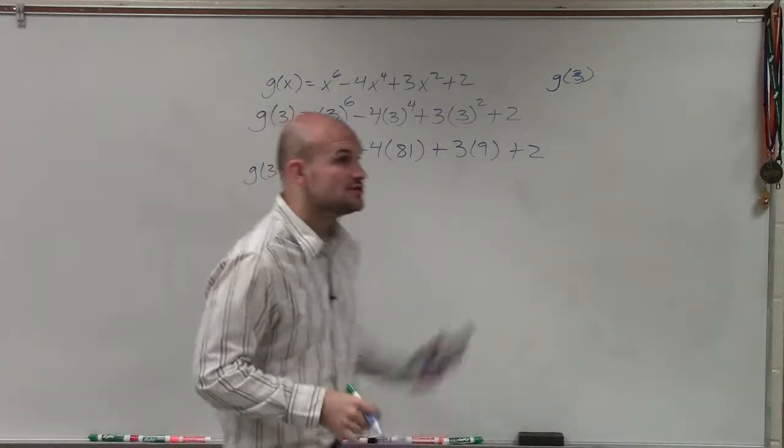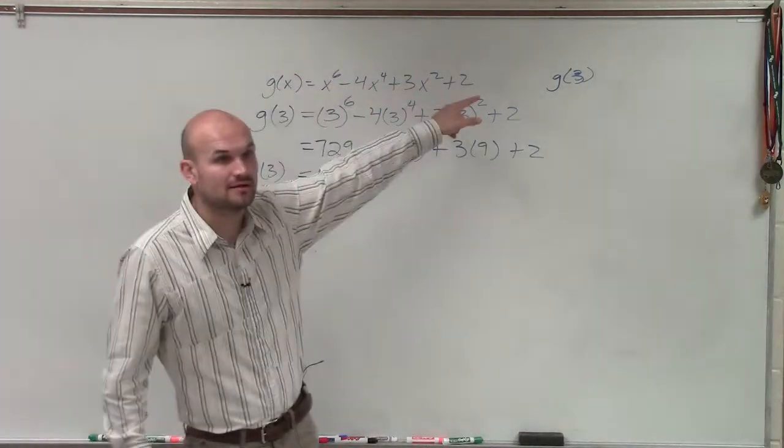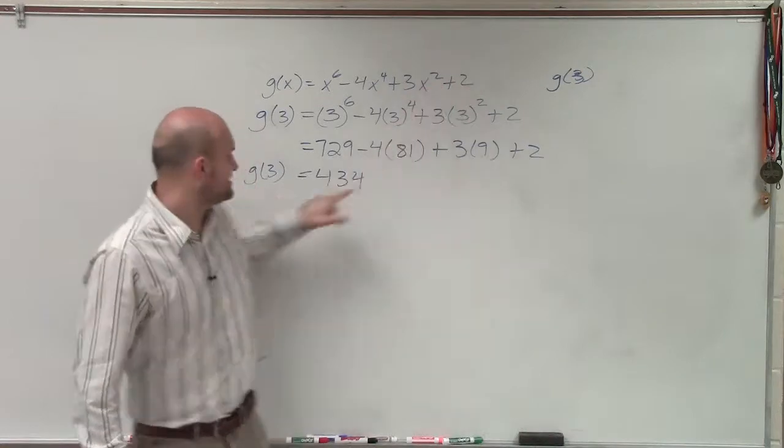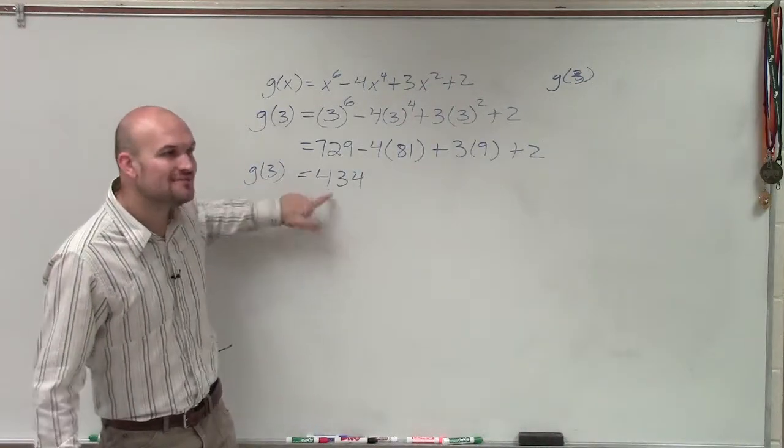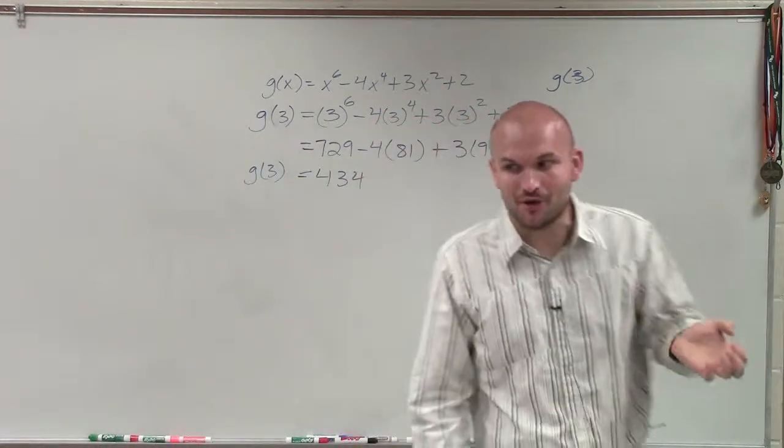So now you just go and simplify the rest of that. So you do 729, and you get 434. Right? So therefore, is 3 a zero of this polynomial? Yes. No, guys, this answer has to be zero. If you get this answer to be zero, then you know it's a remainder.